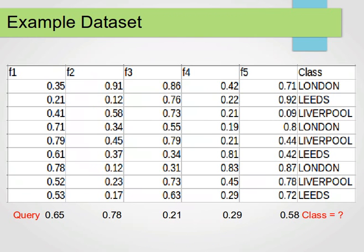I've come up with a dummy dataset — it's not real, just something I made up. We have a five-dimensional set of instances: feature 1, feature 2, feature 3, 4, and 5 — these are our features or attributes. The class column gives us the category. The first instance describes London, then Leeds, Liverpool, London, Liverpool, Leeds, and so on — nine instances in total with three distinct classes: London, Leeds, and Liverpool. We also have a new query point with feature values 0.65, 0.78, and so on, whose class we don't know.